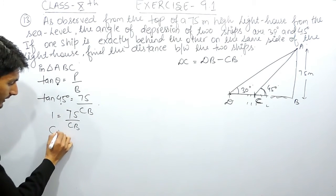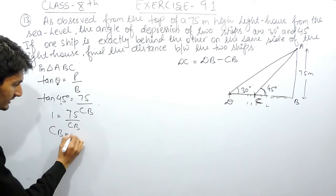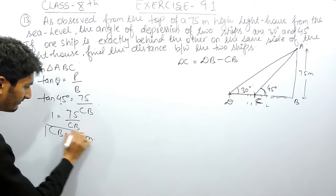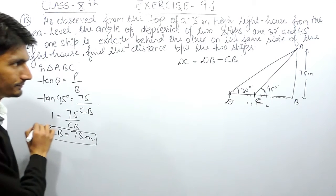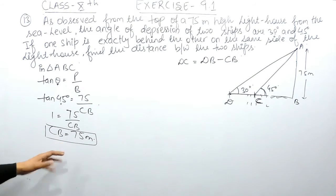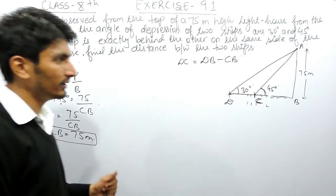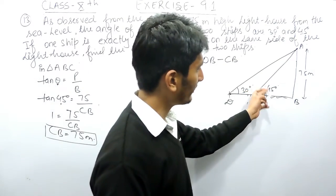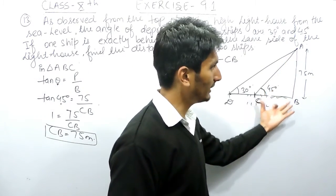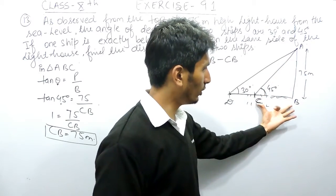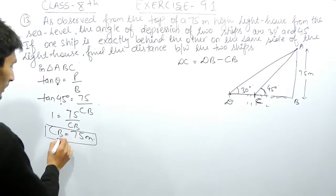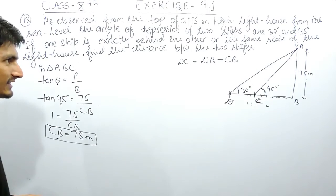Cross-multiplying, the value of CB equals 75 meters. Whenever theta is 45 degrees, the base is the same as the perpendicular, so CB equals 75 meters. Now I have found CB.